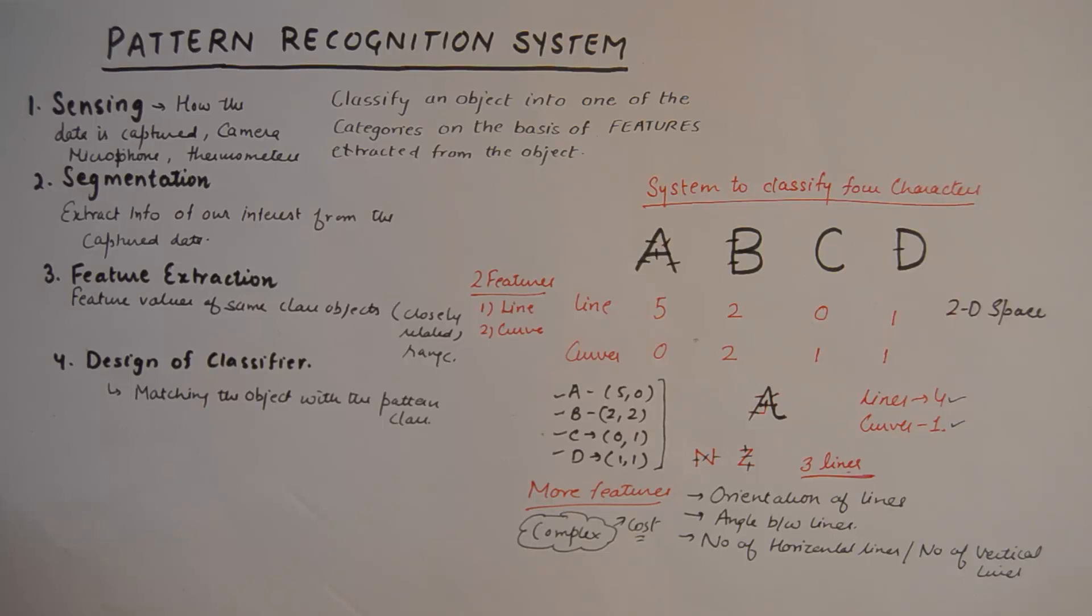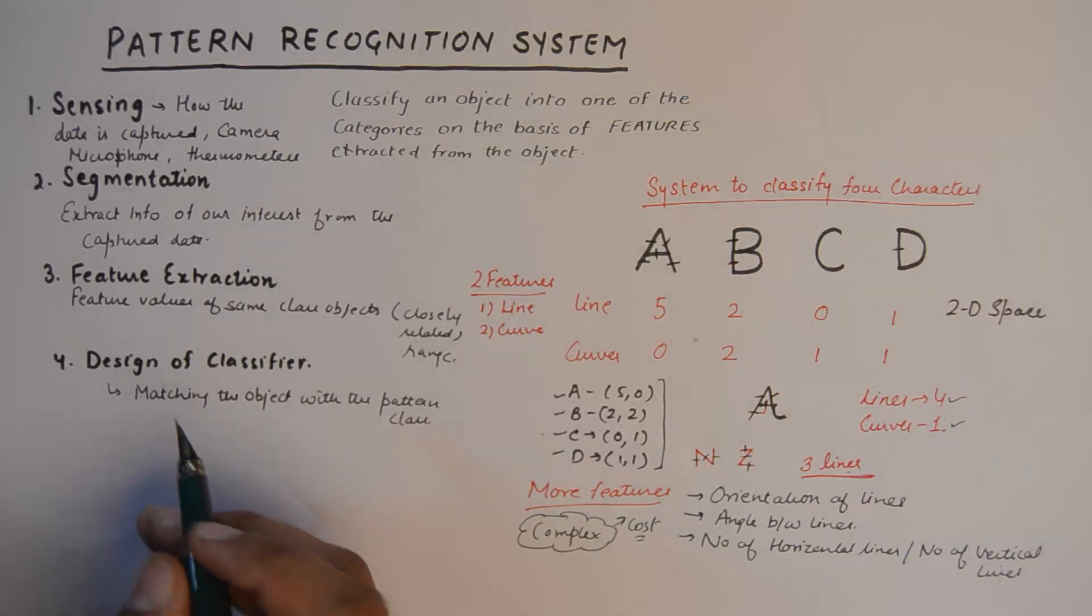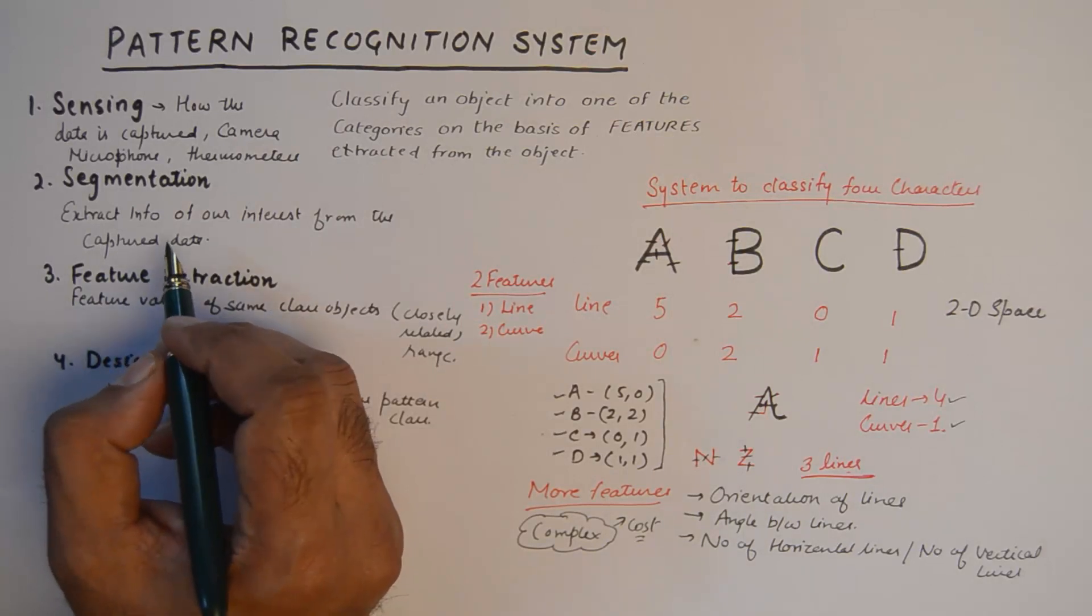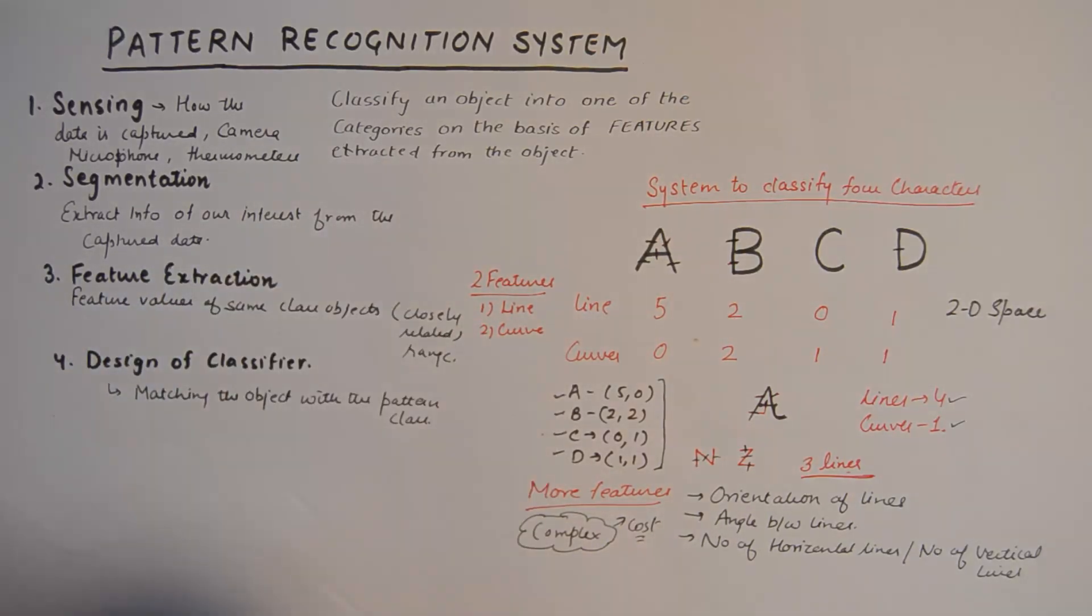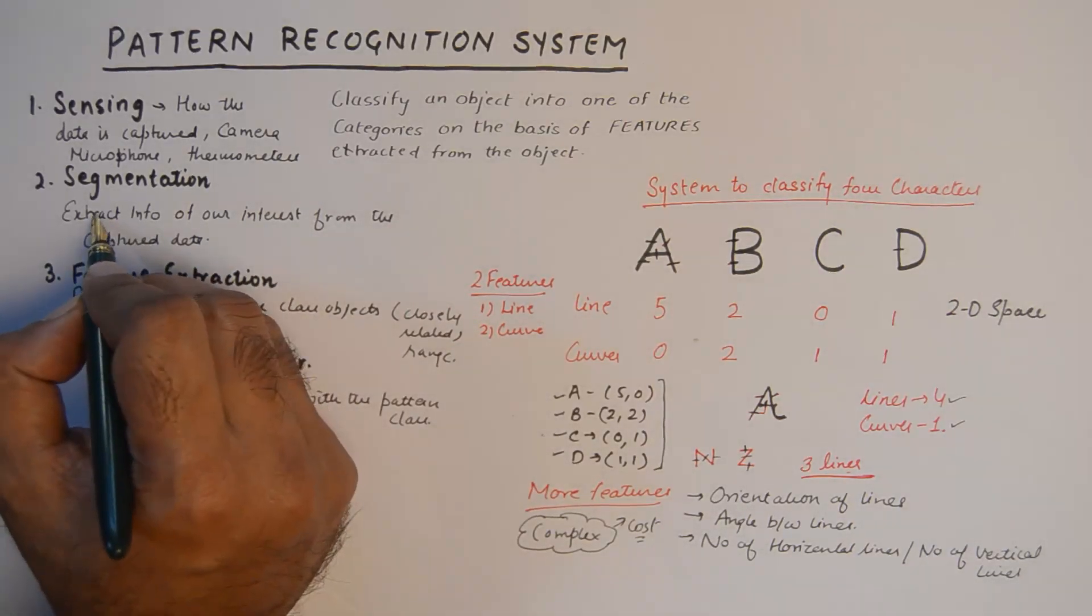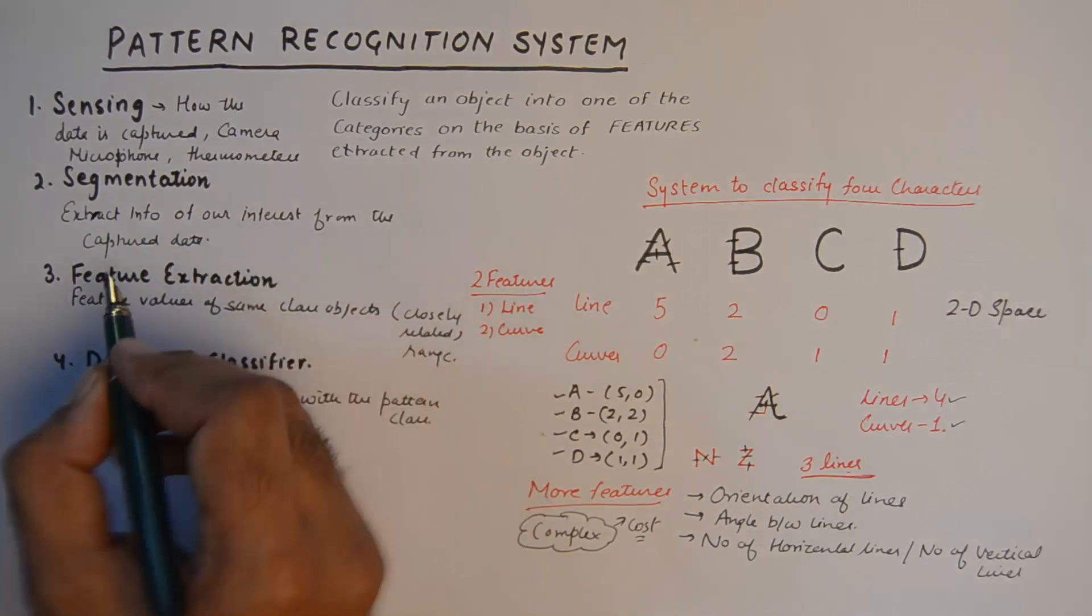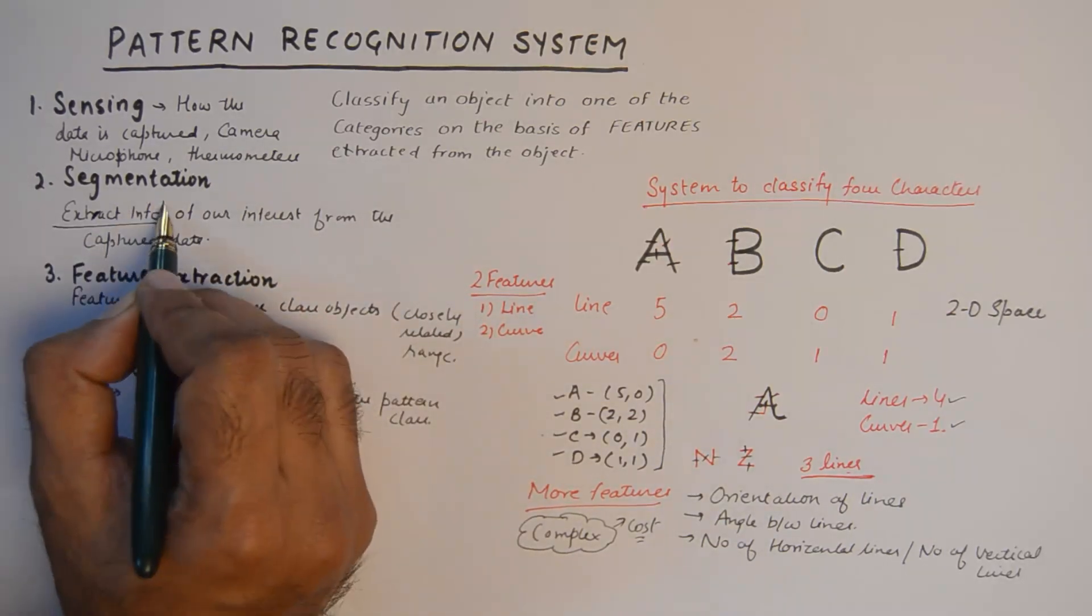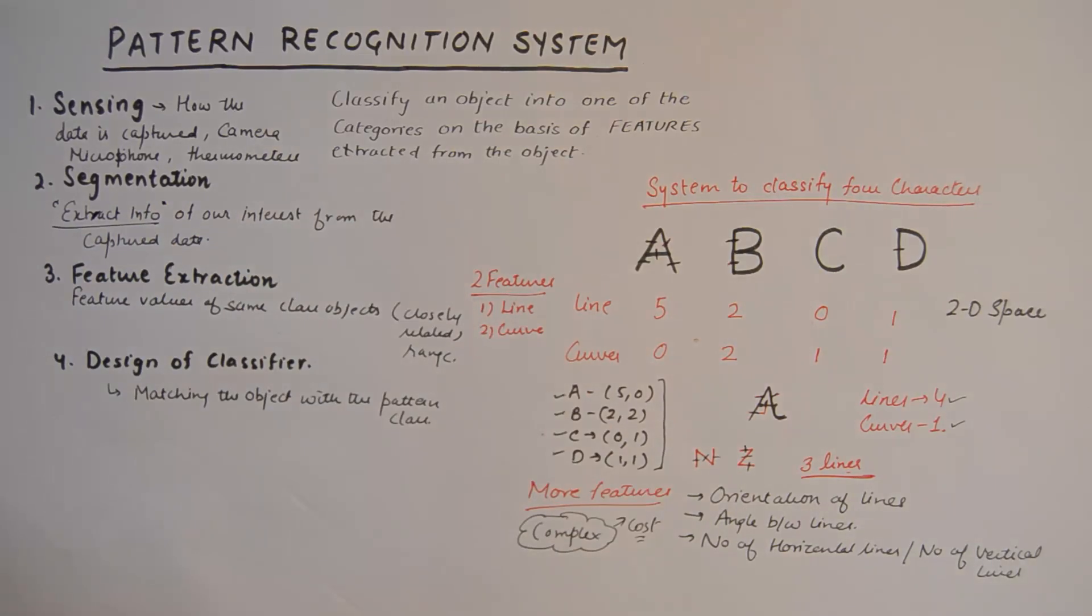Then we have the segmentation block. Now once the data is captured, we need to extract exact info of our interest from the captured data, so this is the key point: that exact info needs to be extracted. And out of the frame, if we can successfully extract the face, that will lay a solid foundation for a robust face recognition system.